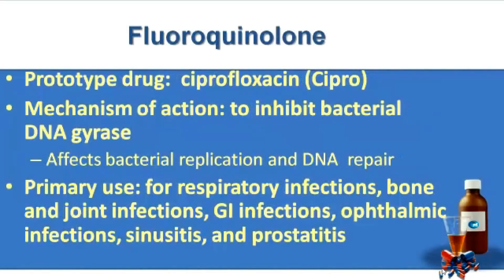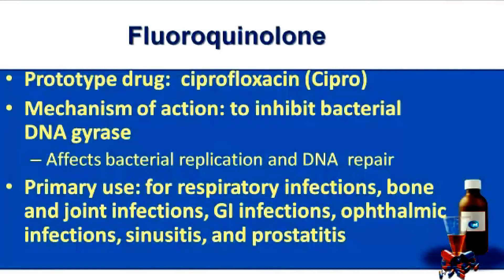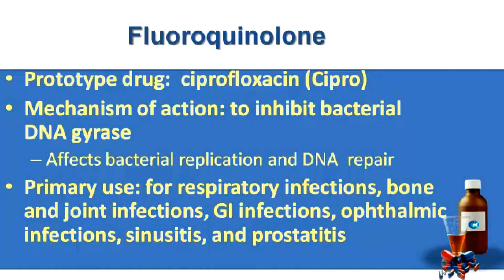With fluoroquinolones, our prototype is ciprofloxacin, which is also known as Cipro. Its mechanism of action is to inhibit bacterial DNA gyrase, which affects bacterial replication and also DNA repair. Fluoroquinolones are primarily indicated for respiratory infections, bone and joint infections, GI infections, ophthalmic infections, as well as sinusitis and prostatitis. Adverse effects include nausea, vomiting, diarrhea, phototoxicity, headache, and also dizziness.